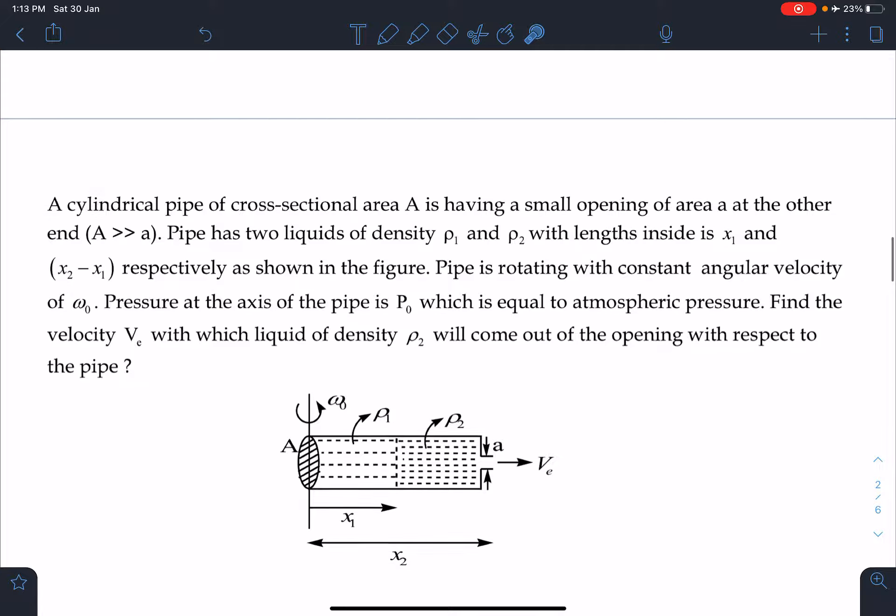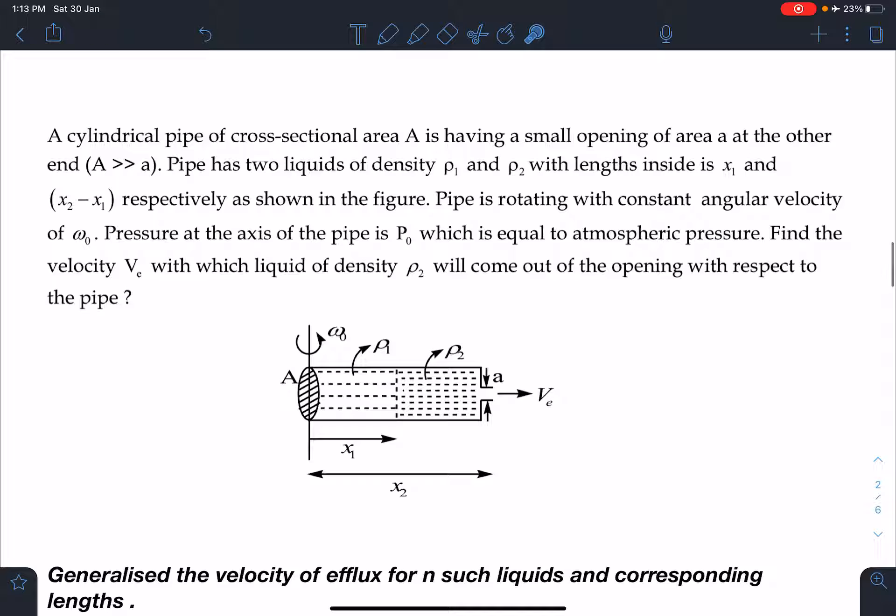Here is a statement of today's problem. A cylindrical pipe of cross-section area A is having a very small opening of area small a at other end. Capital A is very, very large compared to small a.